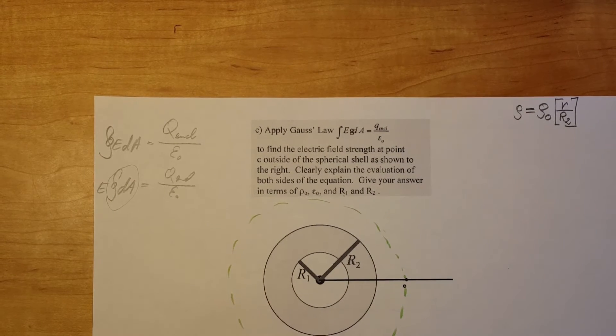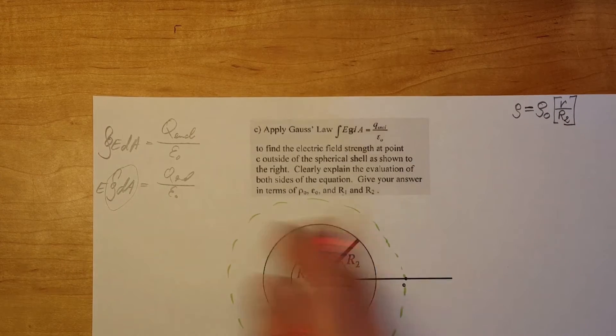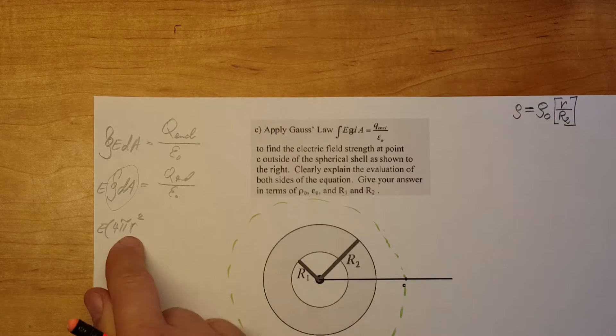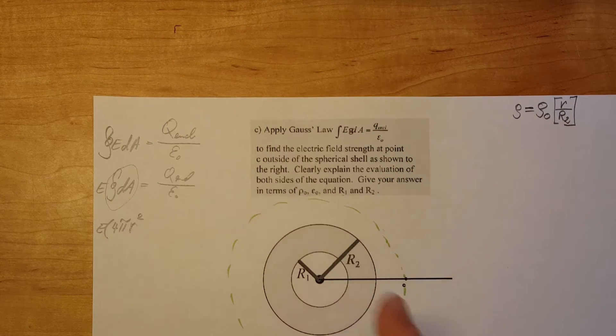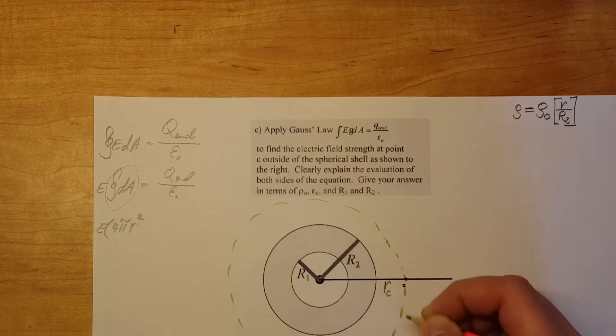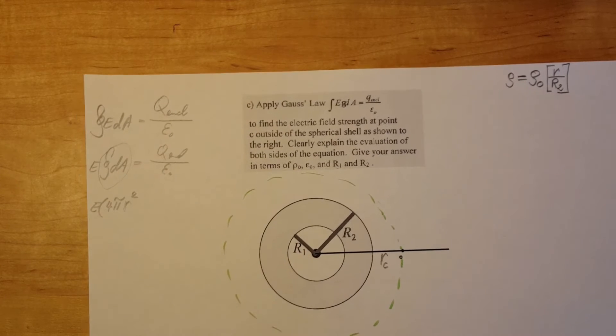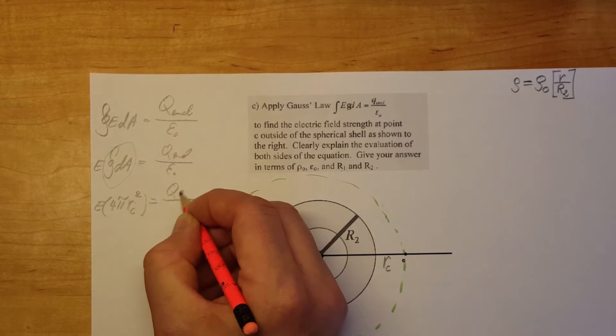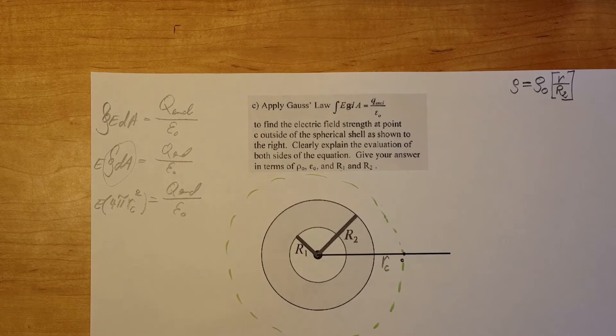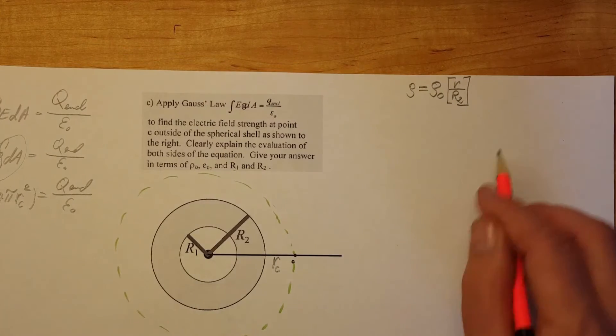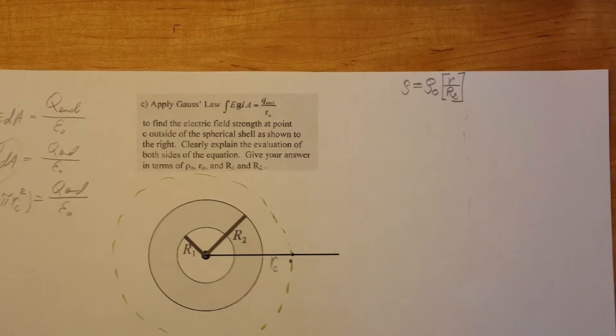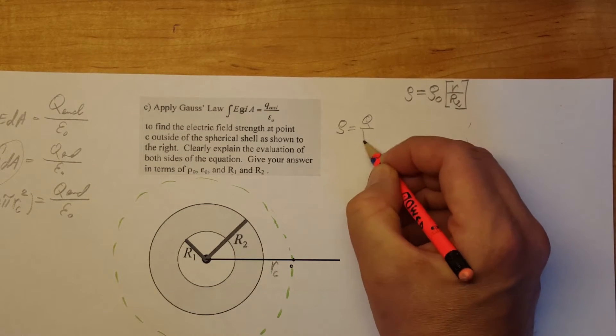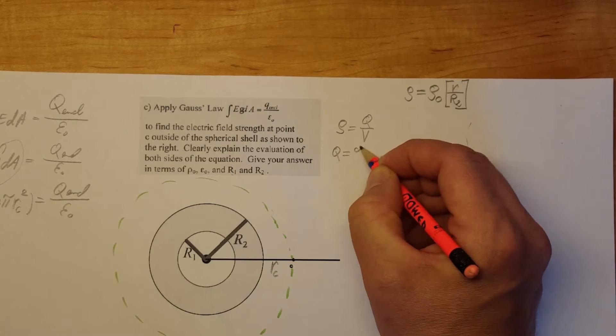Here's integral of our area which will be the surface area of a sphere. E times 4 pi r squared and this R is for our Gaussian surface which we will call small r with an index c for our point c. So we'll put that little c here to the square. Q enclosed over E naught and for now we're going to leave it as is. We're going to come here and do our side work. We're going to start with our charge density formula which is Rho equals Q over V. We're going to solve for Q: Rho times V.